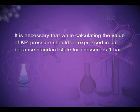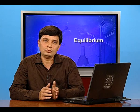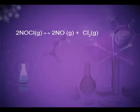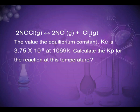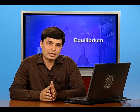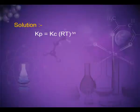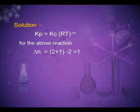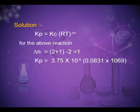Example: For the reaction 2NOCl(g) ⇌ 2NO(g) + Cl2(g), the value of Kc is 3.75×10⁻⁶ at 1069 K. Calculate Kp for the reaction at this temperature. We know Kp = Kc(RT)^ΔN. For this reaction, ΔN = (2+1) − 2 = 1. So Kp = 3.75×10⁻⁶ × 0.0831 × 1069 = 0.033.